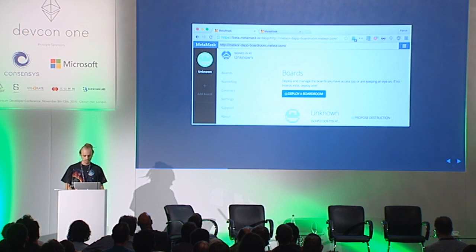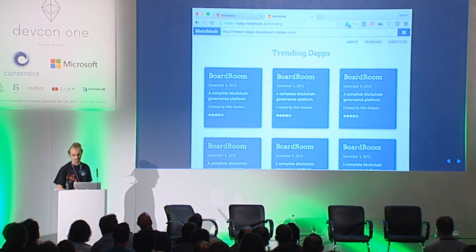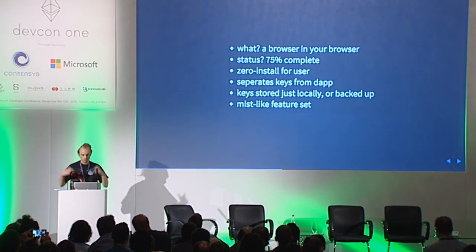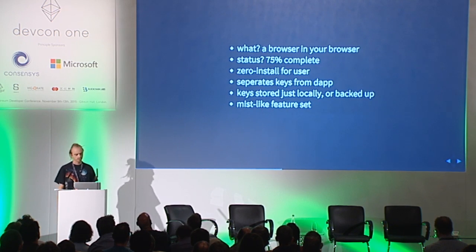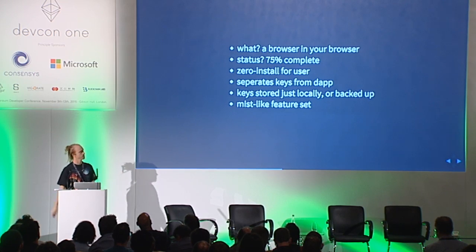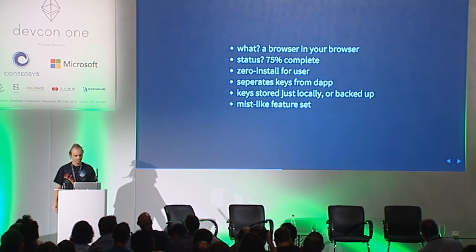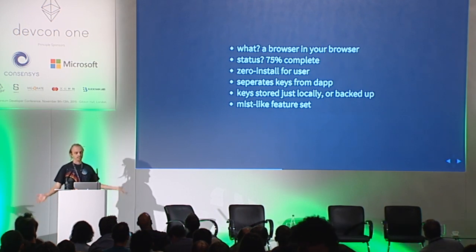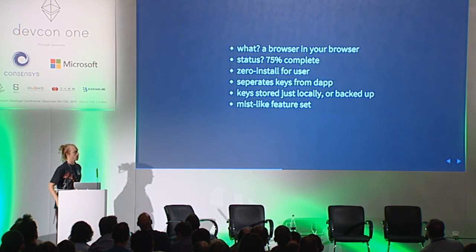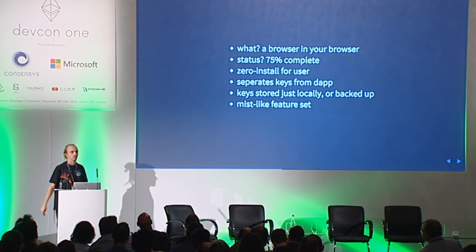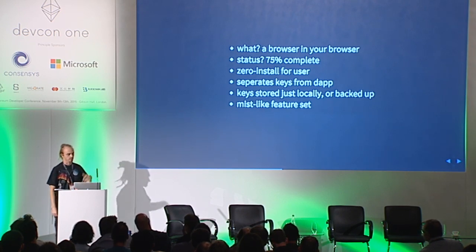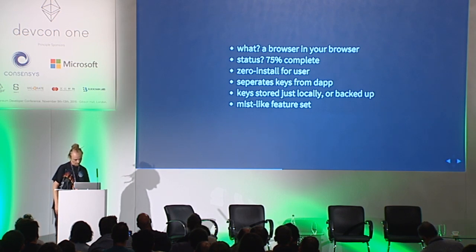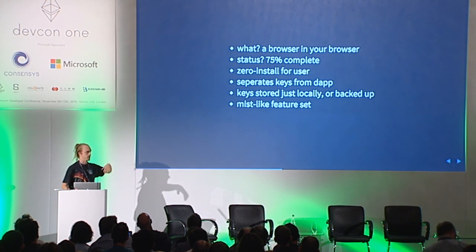This can have a few other features, like some recommended dApps. And, of course, critical is the identity management. So, what is it? It's a sort of browser in the browser. Status: it's pretty close to completion, though it's rather tricky. As I mentioned, some black magic has some bad side effects, so it just requires some iteration. Benefits are zero install for the user. It separates keys from the dApp — basically, you get to keep your secrets to yourself. The keys can just be stored on your local machine; you don't need to send them to me or anything like this. Though there is some reliance on some external servers, just to get around some security concerns the browser has built in. And it has a MIST-like feature set where you can have recommended dApps and things like this.